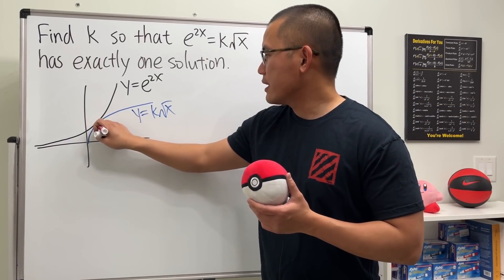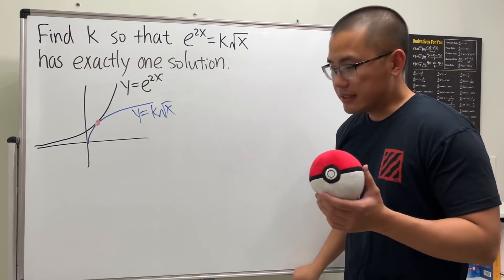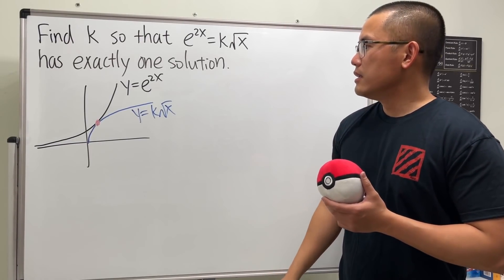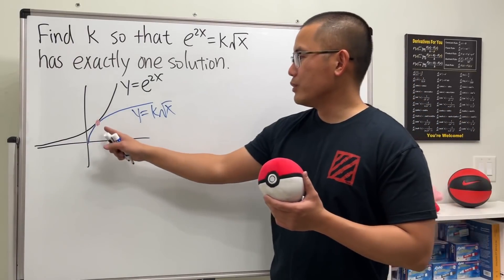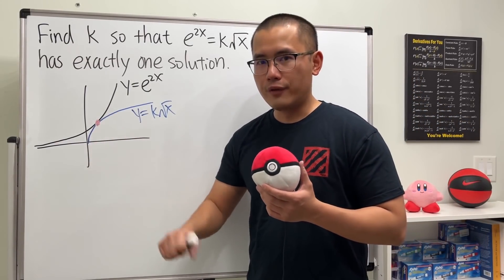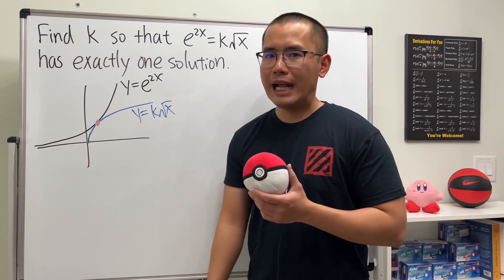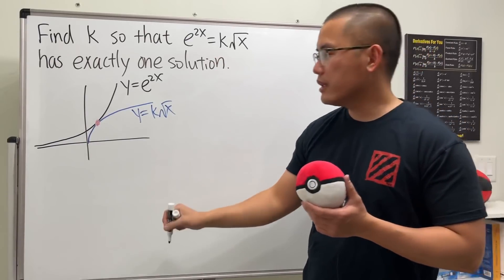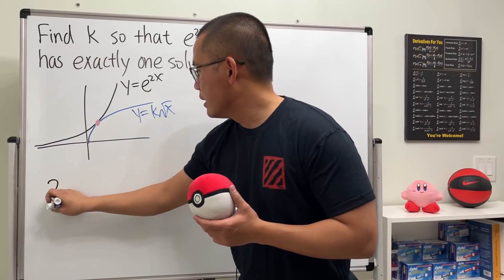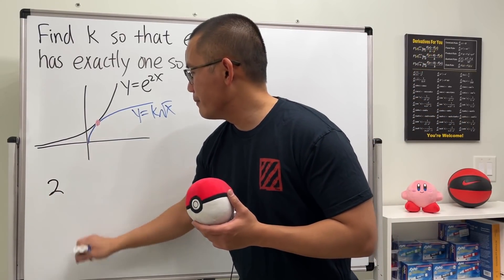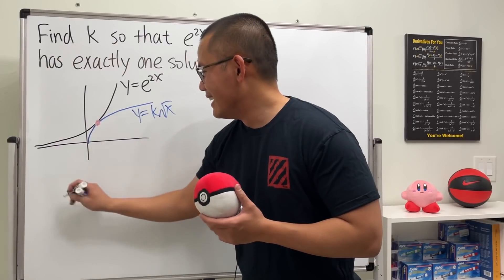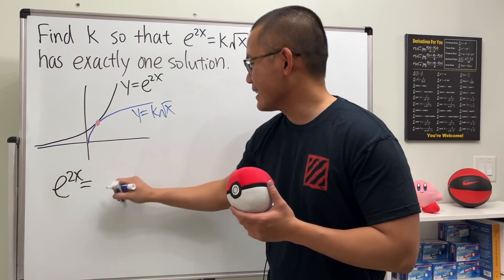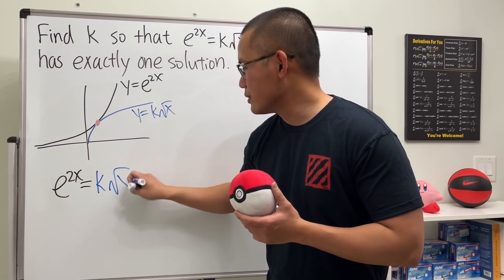So how exactly can we make this happen? This is actually a pretty classic setup. First, in order for the two curves to touch at one point, they must have the same y-value: e^(2x) = k times the square root of x.